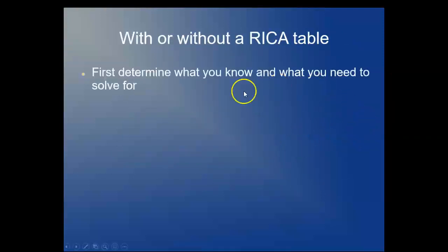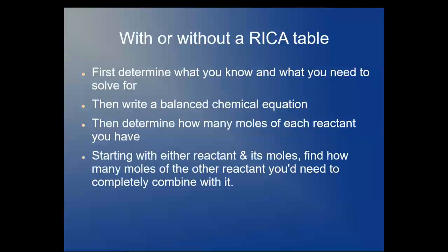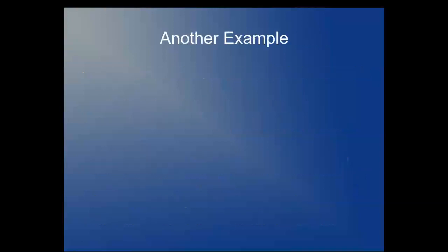Now, with or without a RECA table, you have to first determine what you know and what you need to solve for. You have to write a balanced chemical equation. You have to determine how many moles of reactant you have. And starting with each reactant or its moles, find out how many moles of the other reactant you'd need for a complete reaction. Then you'll find out which is in excess and which is limiting. If you have too much of something, that's obviously a definition of excess. The other one is the limiting, and you use that in the problem. The RECA table is a more formal and graphical way of doing this, and a lot of visual learners find the RECA table to be exactly right for this purpose. Moreover, it's going to teach you something you will use a lot when you get into second semester.